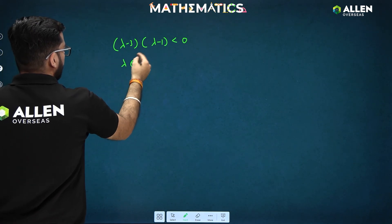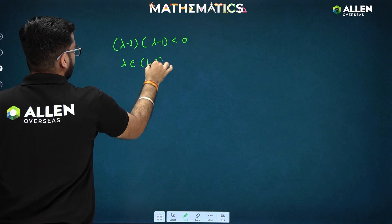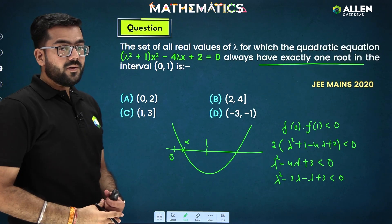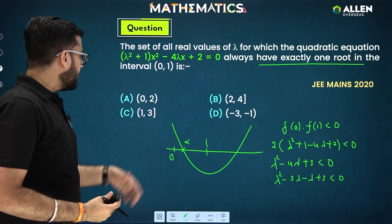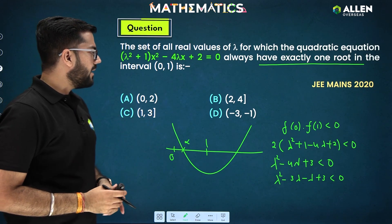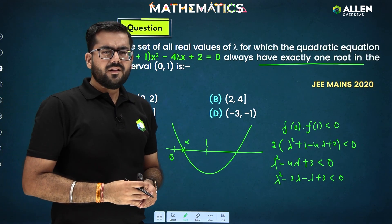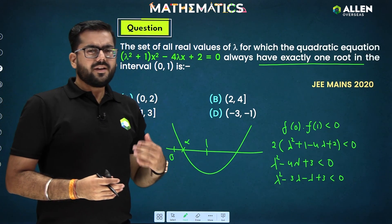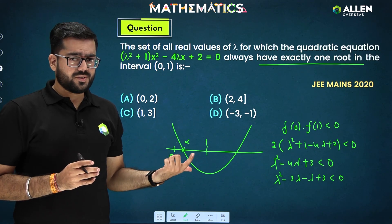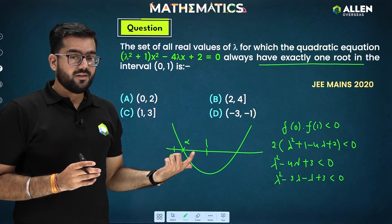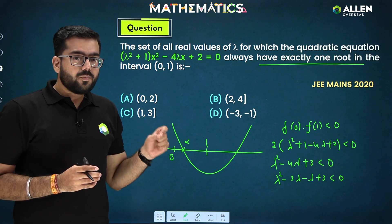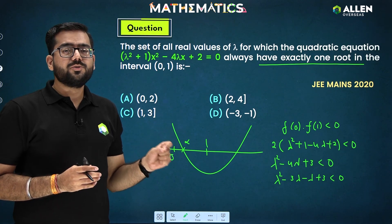From (λ − 3)(λ − 1) < 0, using the wavy curve method, we conclude λ ∈ (1, 3). However, the given option has a closed bracket somewhere, so we need to check the endpoints λ = 1 and λ = 3.